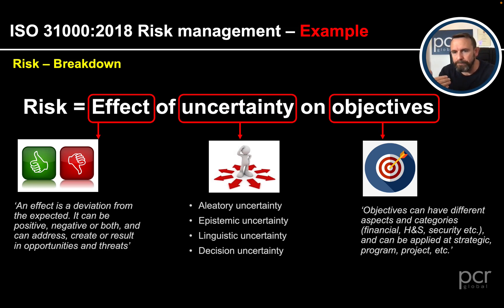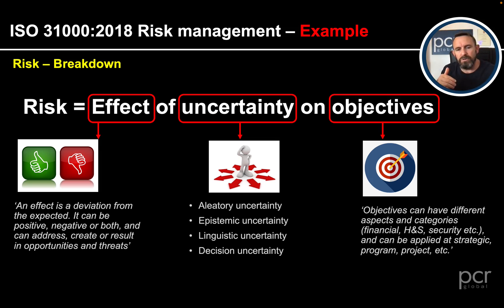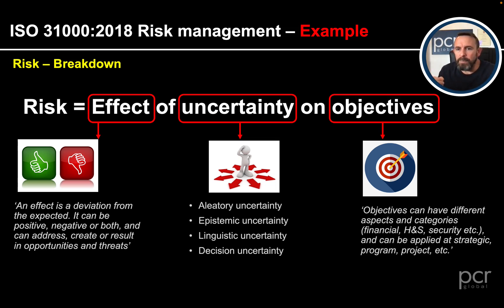The other main word in the definition is uncertainty. It isn't formally defined within the standard, but there are several types: aleatoric uncertainty, epistemic uncertainty, linguistic uncertainty, and decision uncertainty. The two most important to differentiate are aleatoric and epistemic. Aleatoric uncertainty is that uncertainty where, even if we dig deeper, we are probably not going to be any clearer on the outcome - like rolling a dice.